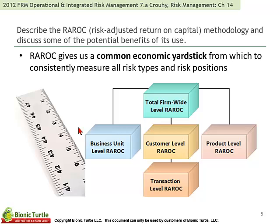Chapter 14 is largely about RAROC. One of the key points about RAROC is that it gives us a common economic yardstick to measure risks and positions — both horizontally at the business unit, customer, and product level, but also vertically as a way for us to aggregate at the transaction, customer, portfolio, and total firm level.